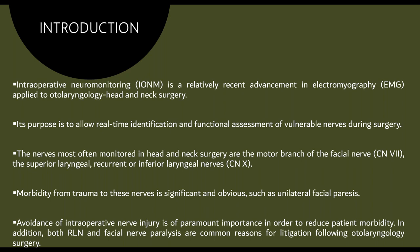Its purpose is to allow real-time identification and functional assessment of vulnerable nerves during different types of surgical procedures. The nerves most often monitored in the head and neck are the motor branch of the facial nerve, cranial nerve seven, and the superior laryngeal or recurrent laryngeal nerve, which are branches of cranial nerve ten, the vagus nerve. Morbidity from trauma to these nerves is significant — unilateral facial paralysis for facial nerve injury, and hoarseness and loss of voice for vagus nerve injury. Both recurrent laryngeal nerve and facial nerve paralysis are common reasons for litigation following ENT surgeries.